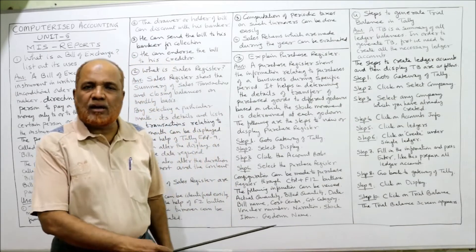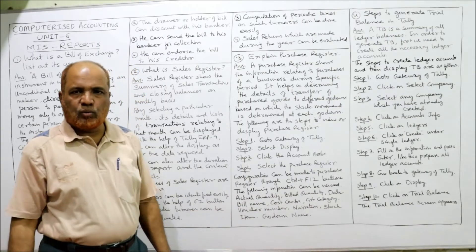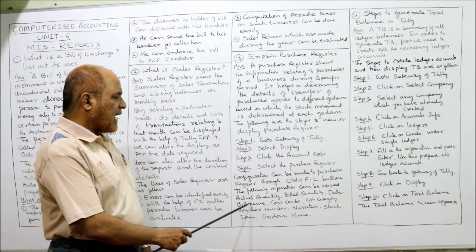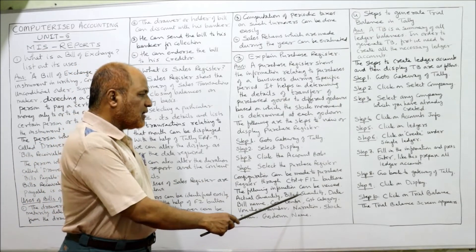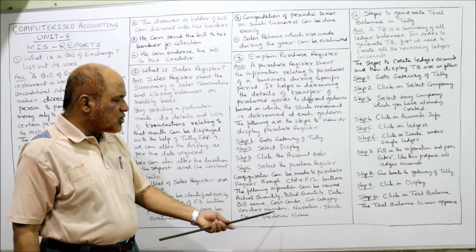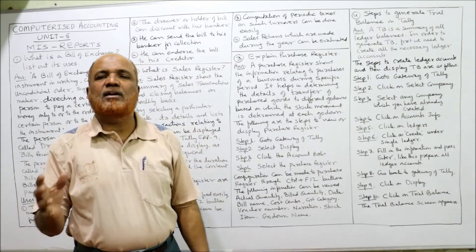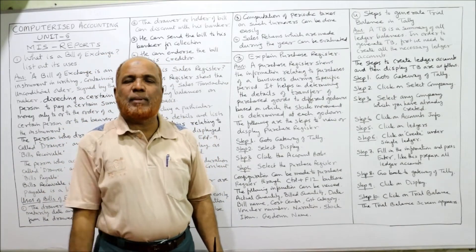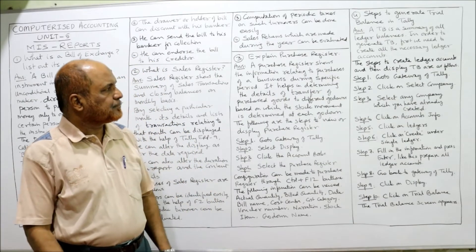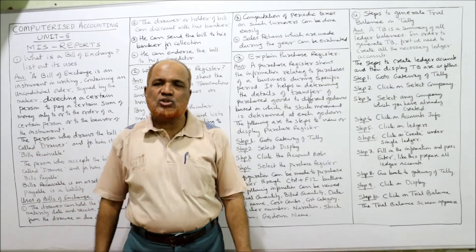By pressing Control + F12 we can configure the purchase register according to our requirement. The following information can be viewed: actual quantity, bill date, bill name, cost center, cost category, voucher number, narration, stock item, and go-down name. These are the data which can be obtained by displaying the purchase register.